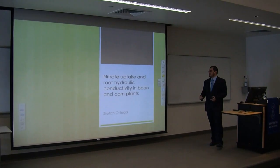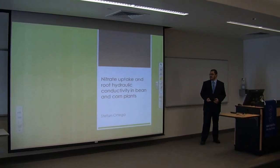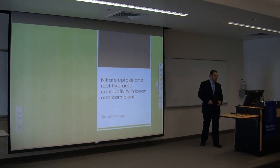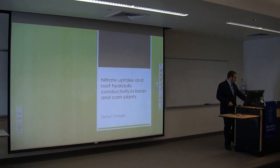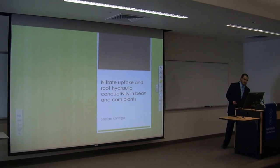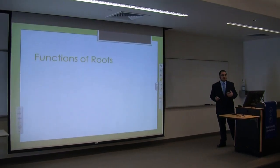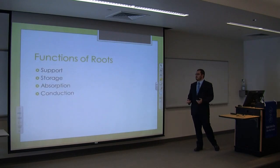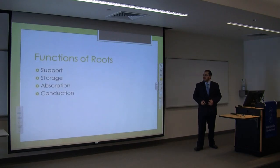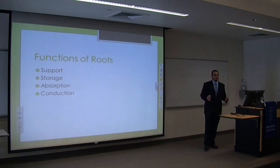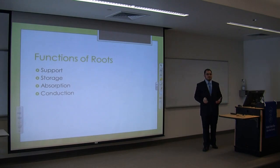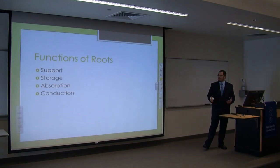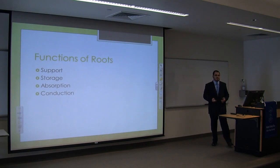My project is entitled Nitrate Uptake and Root Hydraulic Conductivity in Bean and Corn Plants. To start, I'd like to give a little bit of background on roots. There are quite a few functions of roots. Four of the main ones are support, storage, absorption, and conduction. The roots help support the plant to the ground, they store nutrients, and most importantly they handle absorption and conduction of nutrients and water.